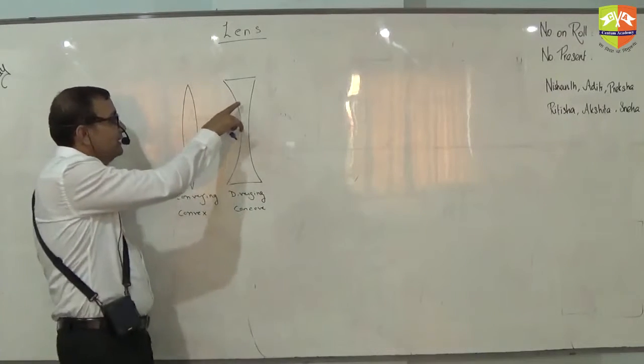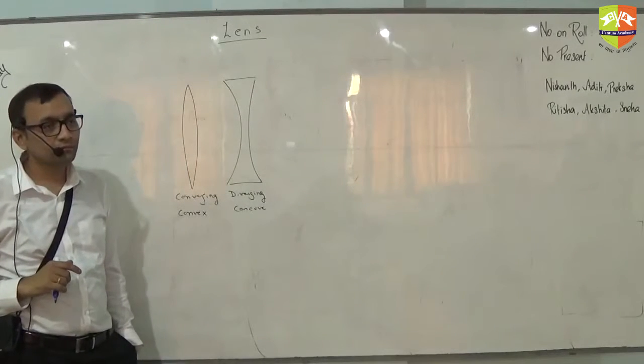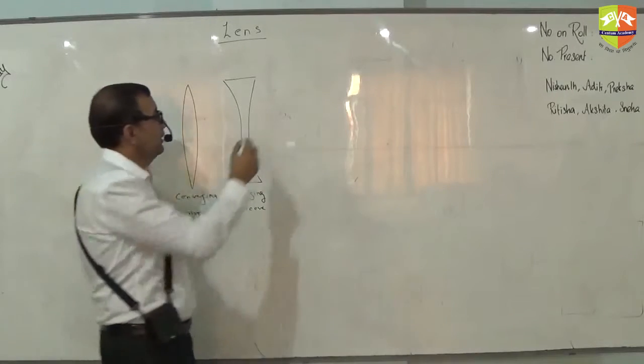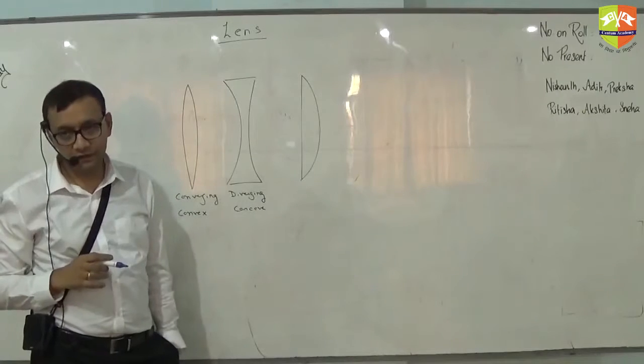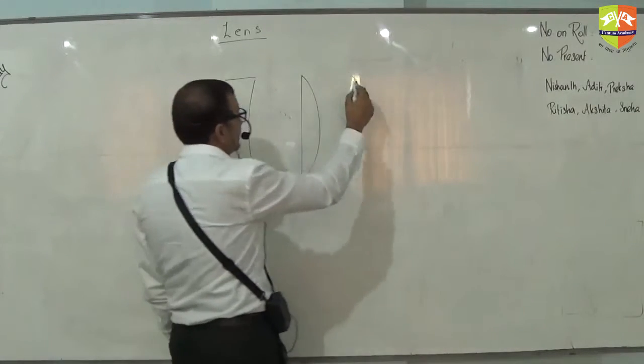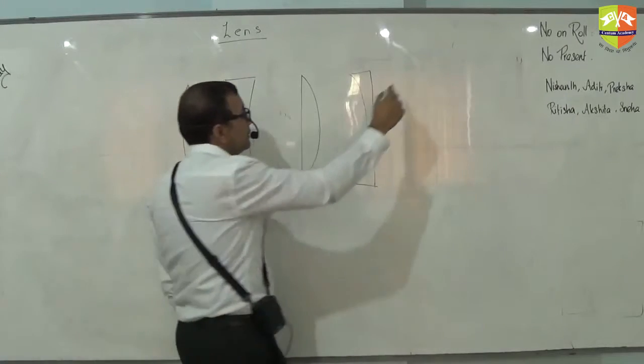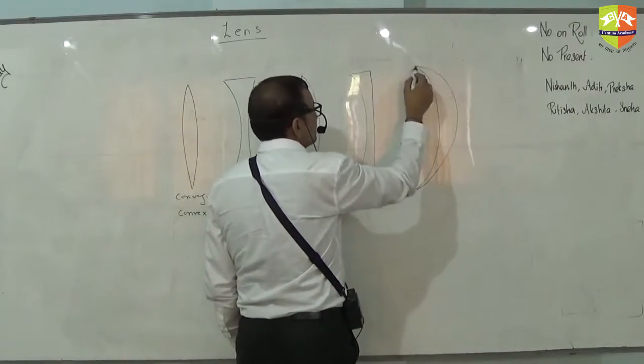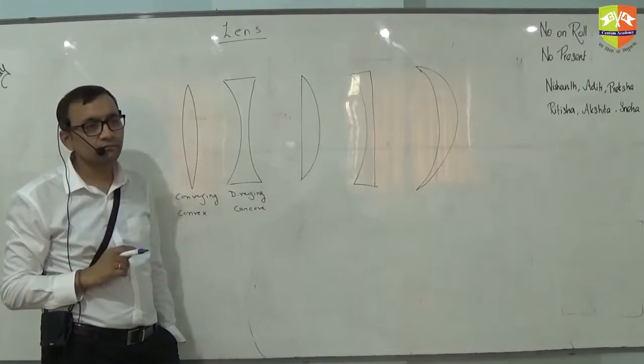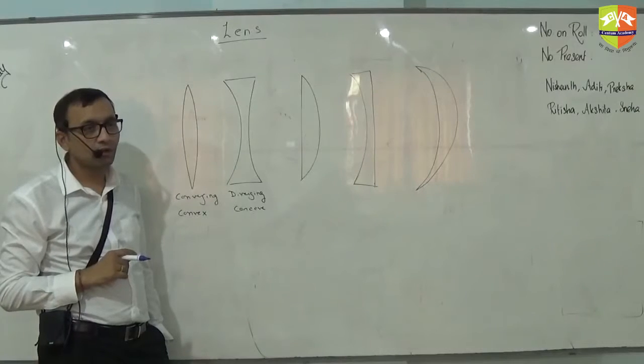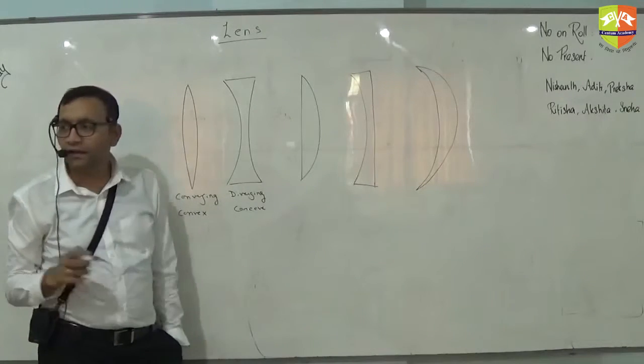What about this? This is plano convex. This one is plano concave. And the assumption is all of their thicknesses are small.